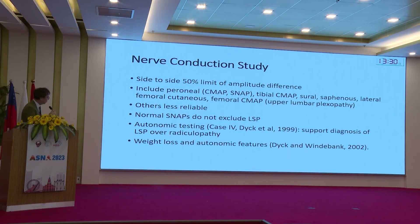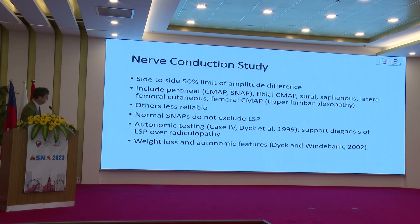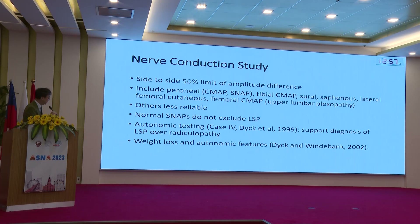Nerve conduction approaches depend on what techniques you are comfortable with and what normal control values you have. In general, a side-to-side comparison with a limit of 50% is used, particularly for the sensory nerve action potential. Bear in mind that a normal sensory nerve potential does not exclude lumbosacral plexopathy. In some centres, autonomic testing has also been used — as in older studies by James Dick — to support the diagnosis.